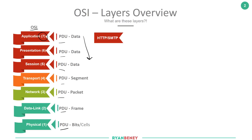Regardless of what it is, we all agreed that a networking application is an application that interacts with the network, and therefore those networking applications sit at layer 7. There are also certain applications that do not require networking interaction — applications like Notepad and Paint — and those type of applications do not sit at layer 7 of the OSI model.